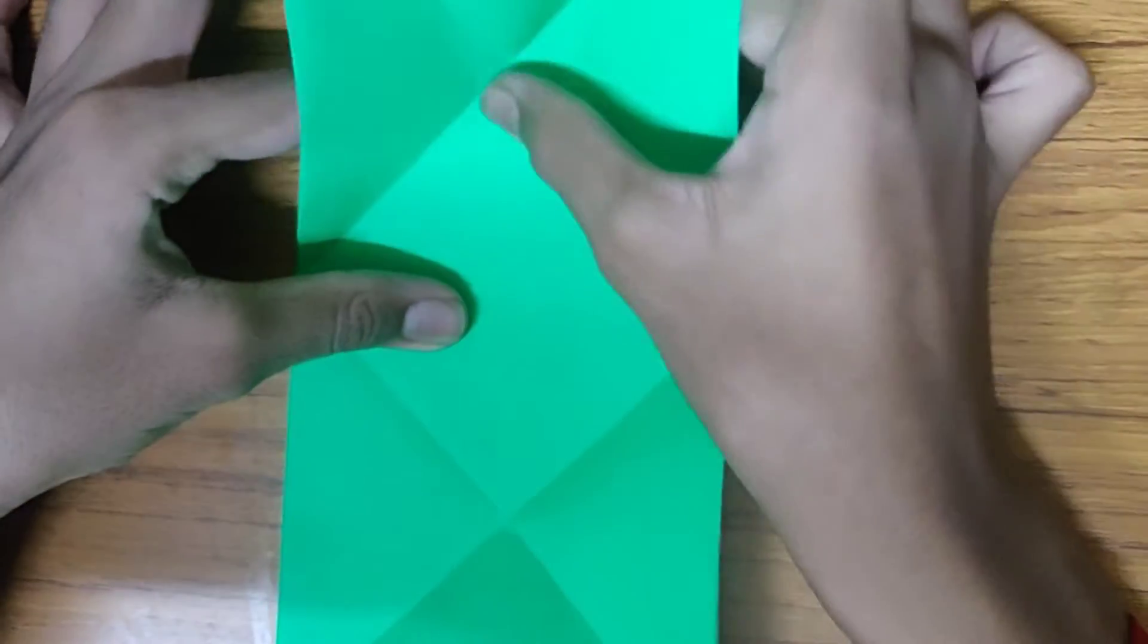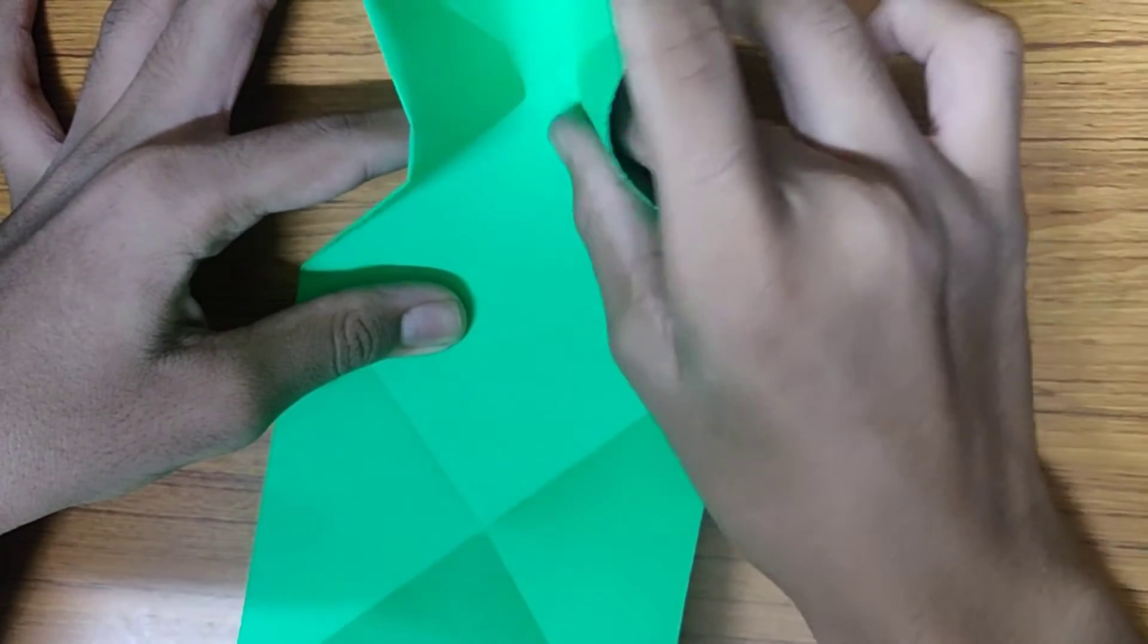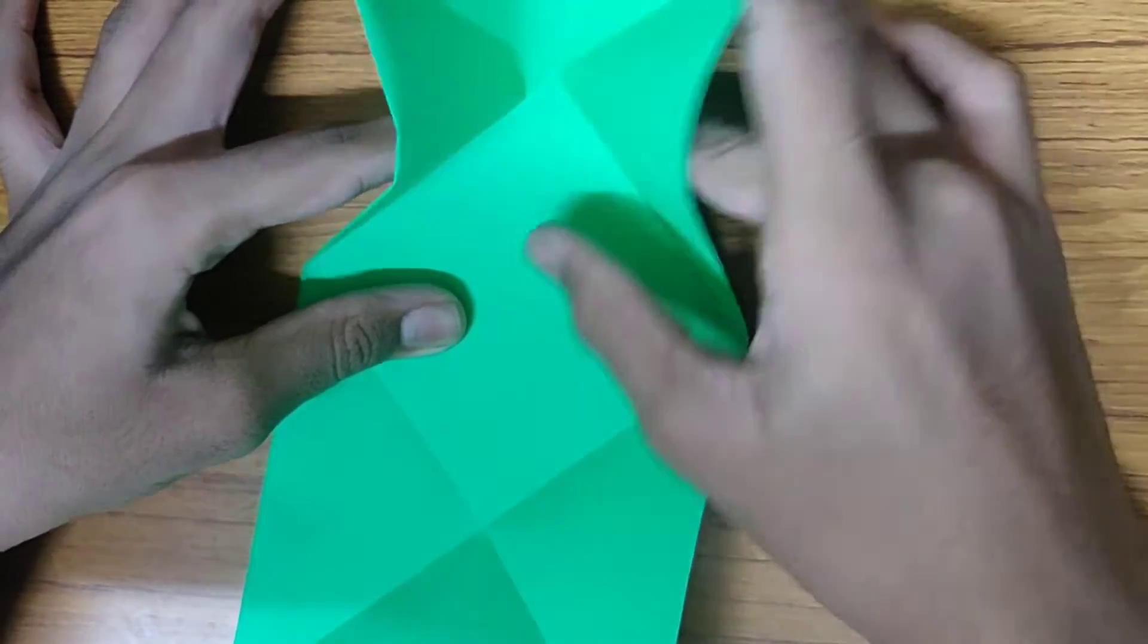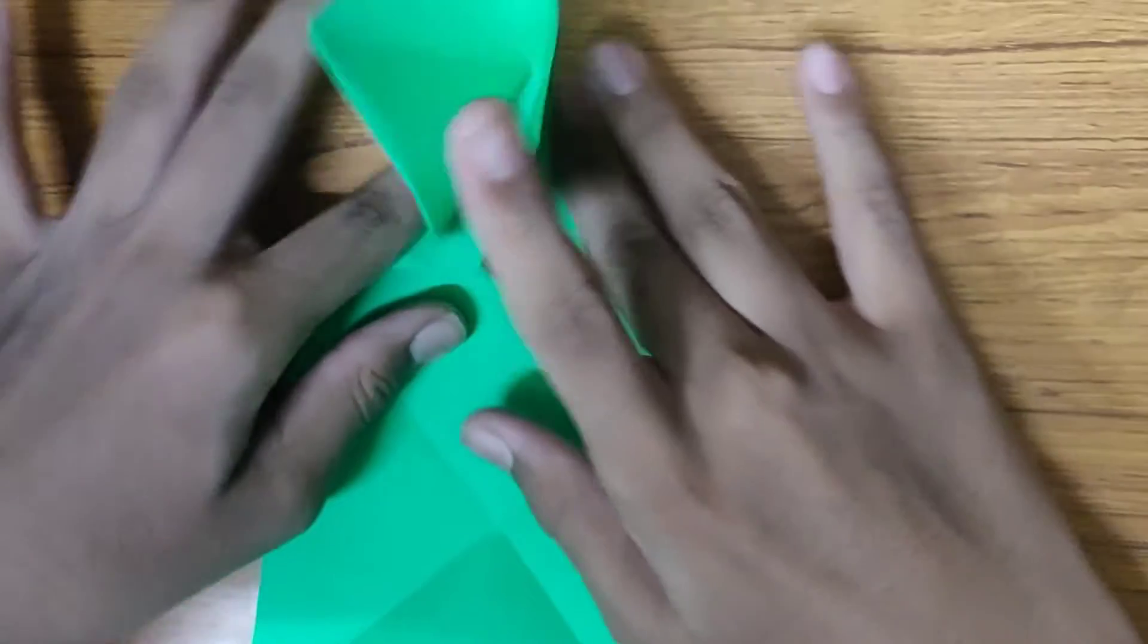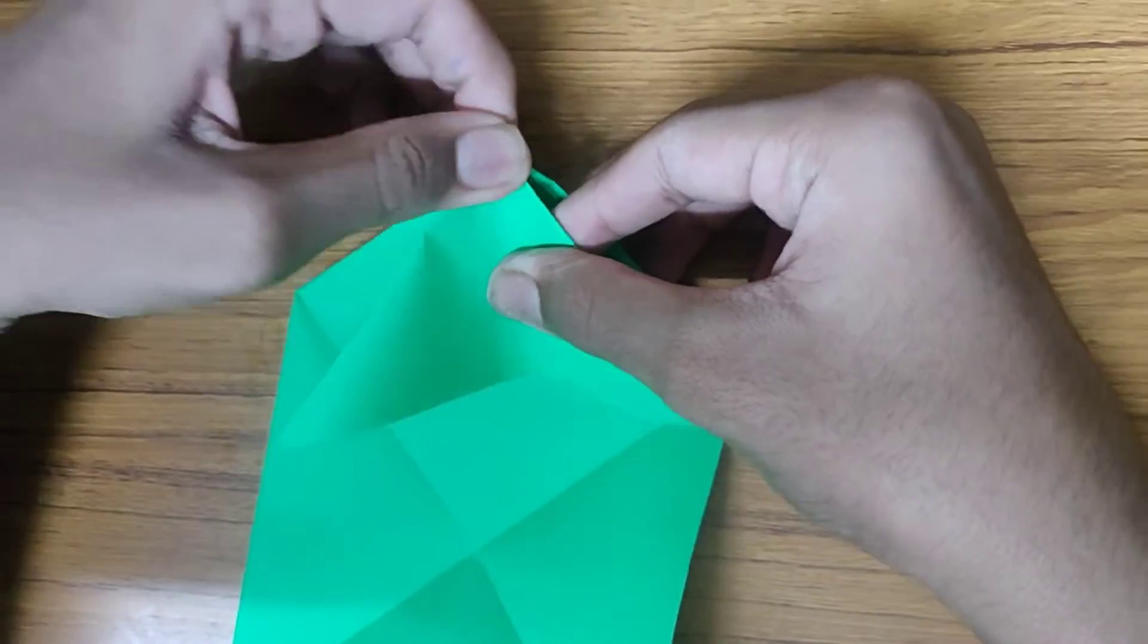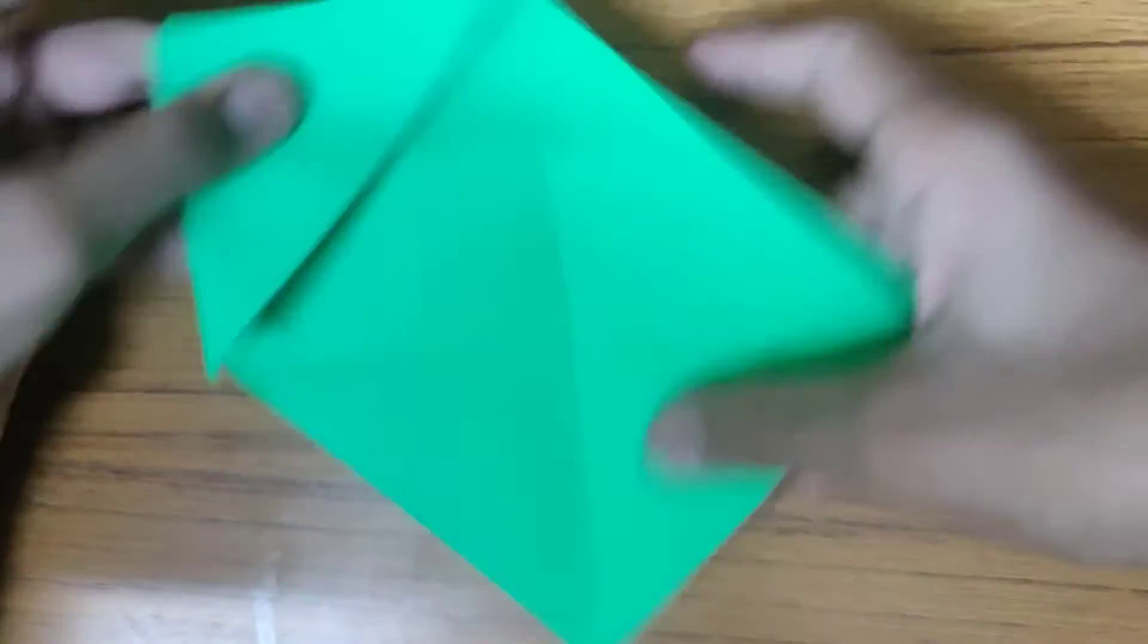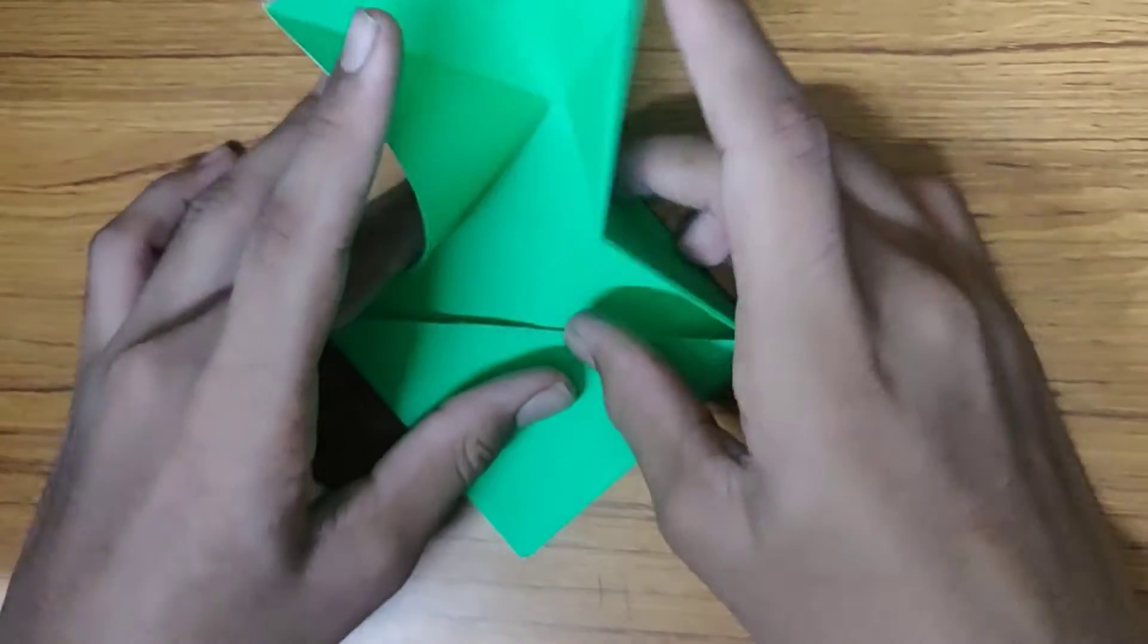Now gently push in the center like this. This is quite similar to that of the origami boat fold. Press this like this, crease it well. Do the same on the other side as well.